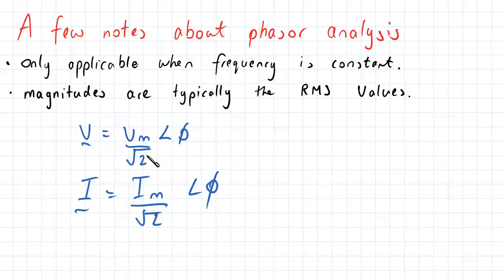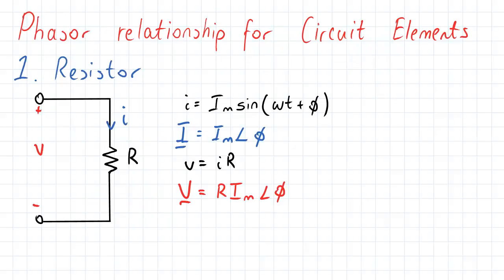So therefore, we're just going to have to divide the magnitudes by root 2 to achieve our RMS values. Furthermore, there are some extra analyses that are required from phasor analysis, namely the phasor relationship for certain circuit elements. So the first circuit element we'll be looking at is the resistor.